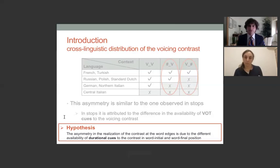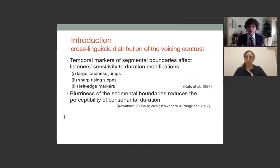Our hypothesis is that the asymmetry in the realization of the contrast at the word edges is due to the different availability of durational cues to the contrast in word initial and word final position. So we now have to ask ourselves, how do listeners detect these durational cues? How do listeners assess the duration of a segment? Temporal markers have been shown to affect listeners' sensitivity to duration modifications at the segmental boundaries. In particular, large loudness jumps favor perceptibility over smaller loudness jumps. Sharp rising slopes favor perceptibility over shallower rising slopes. And left edge markers favor perceptibility over right edge markers. On the contrary, the blurredness of the segmental boundaries reduces the perceptibility of consonantal duration.